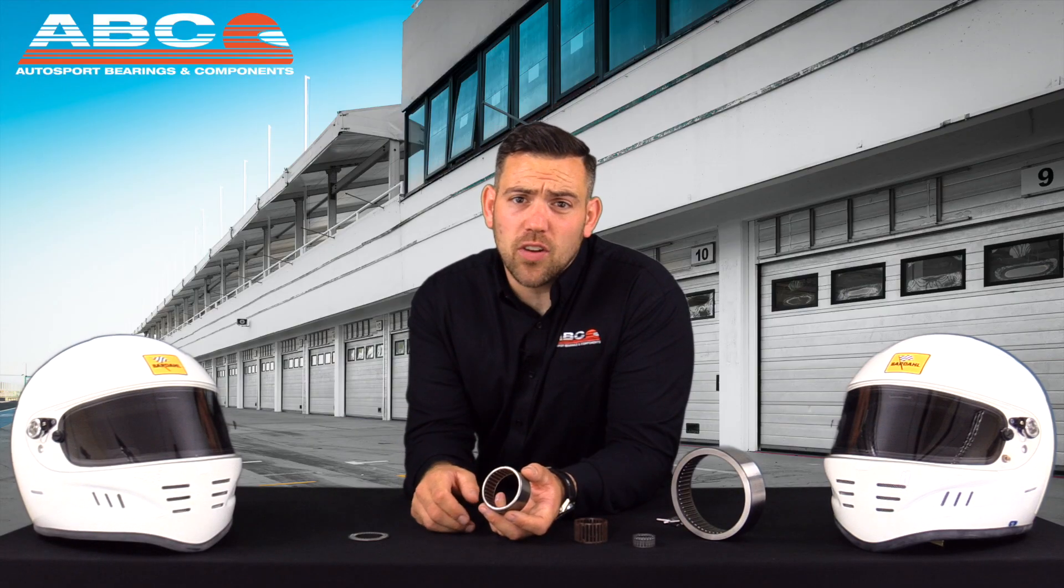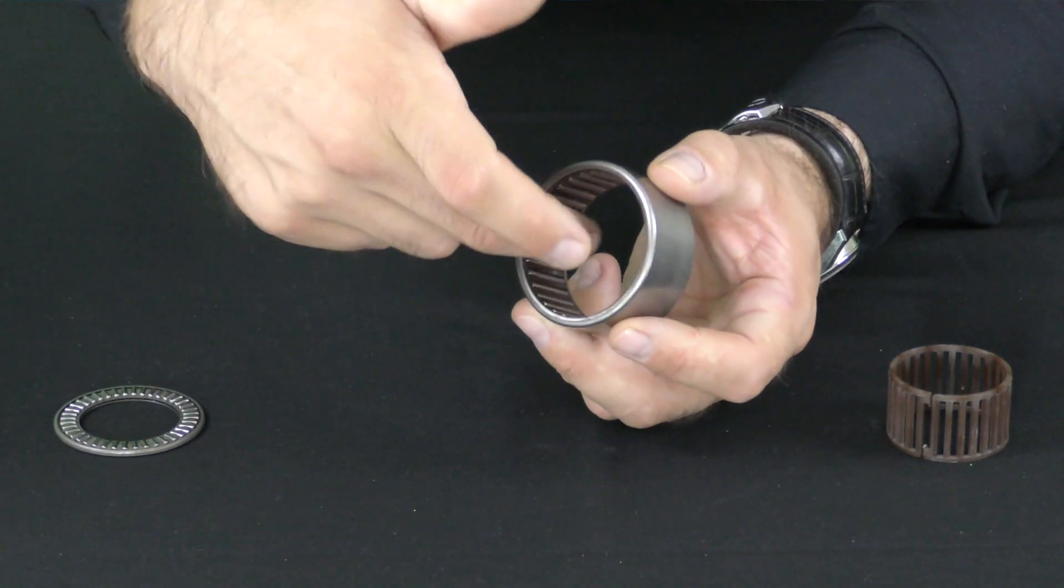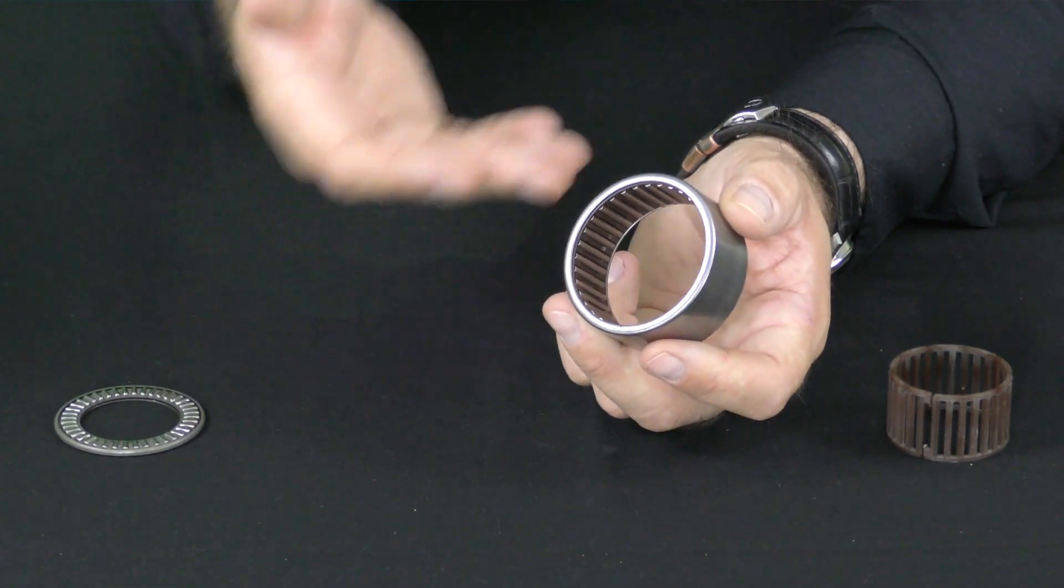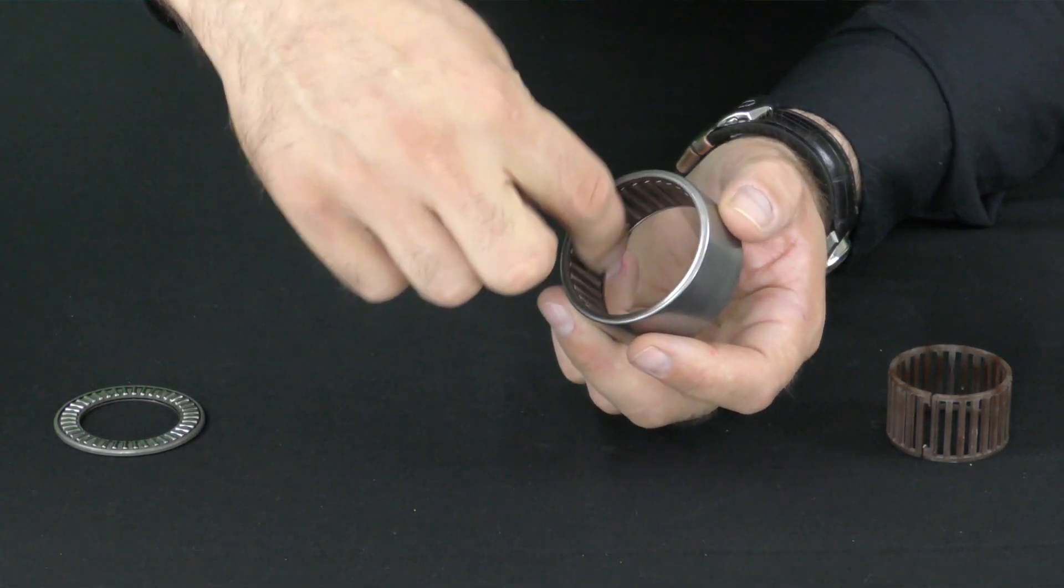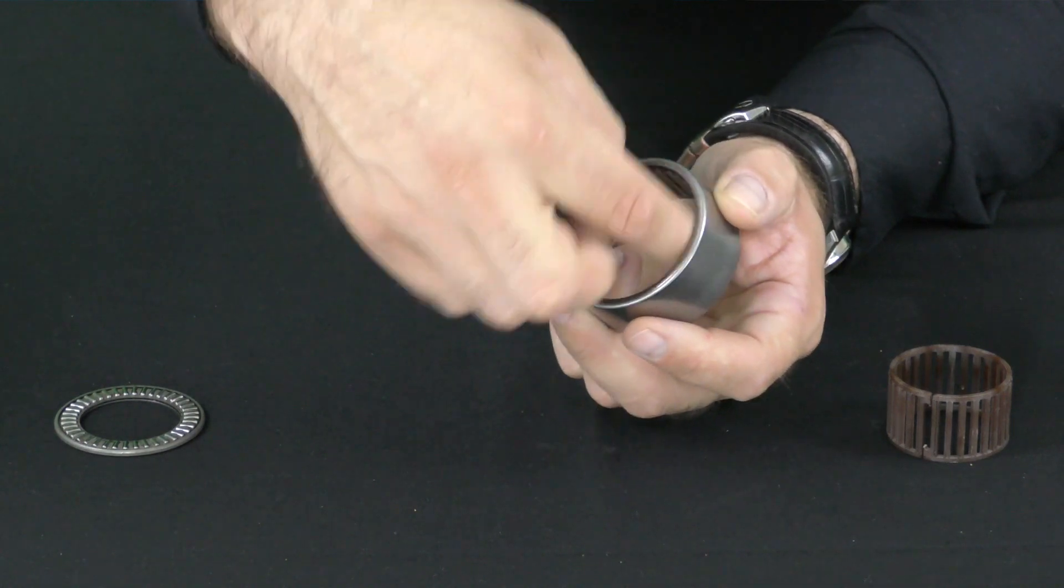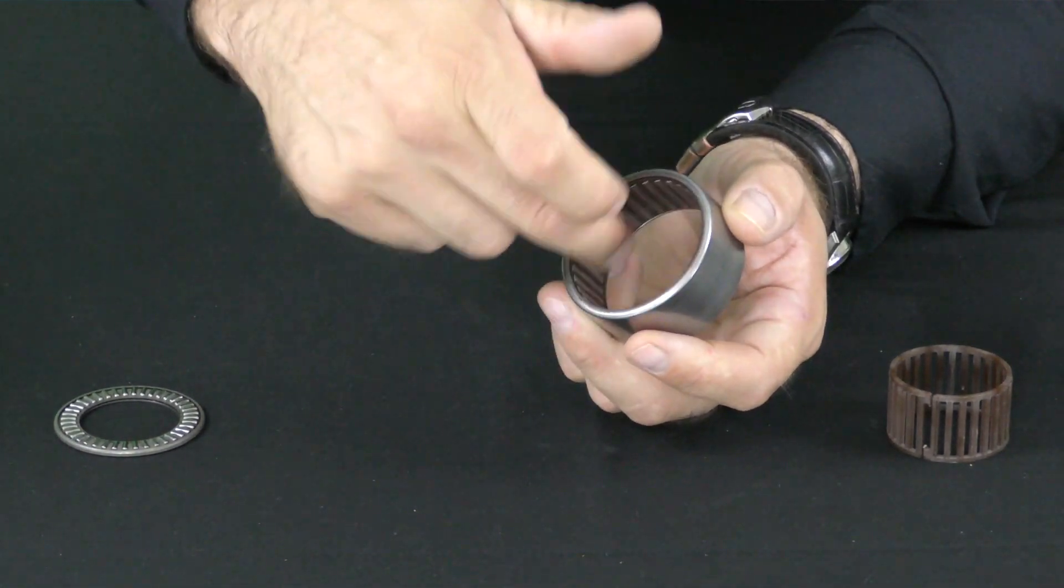So if we talk about the different types of needle roller, this example that I've got in my hand is a cage-guided needle roller bearing. It has a drawn cup outer, it has a cage that guides the needles, and the rolling elements themselves are what actually reduce the friction with the rotating shaft.